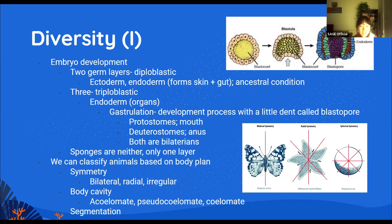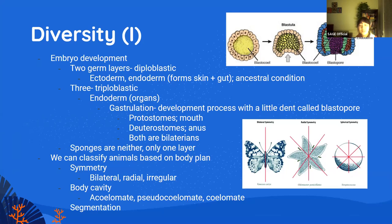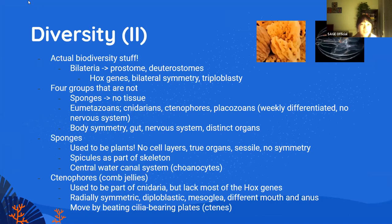We can also classify animals based on segmentation — how their bodies are segmented. For example, ants obviously have three parts because they're insects, but then you also have earthworms which have a lot of parts. And that brings us to the second slide on actual biodiversity: classifying organisms into groups.